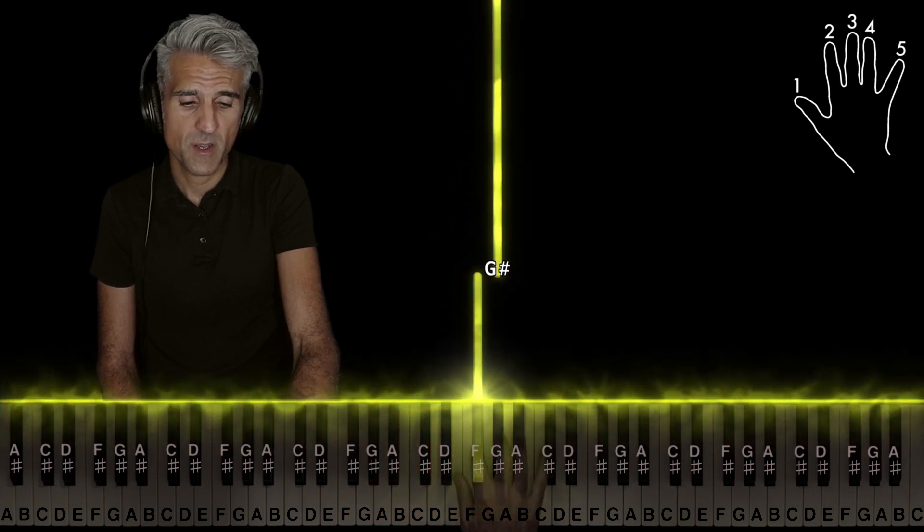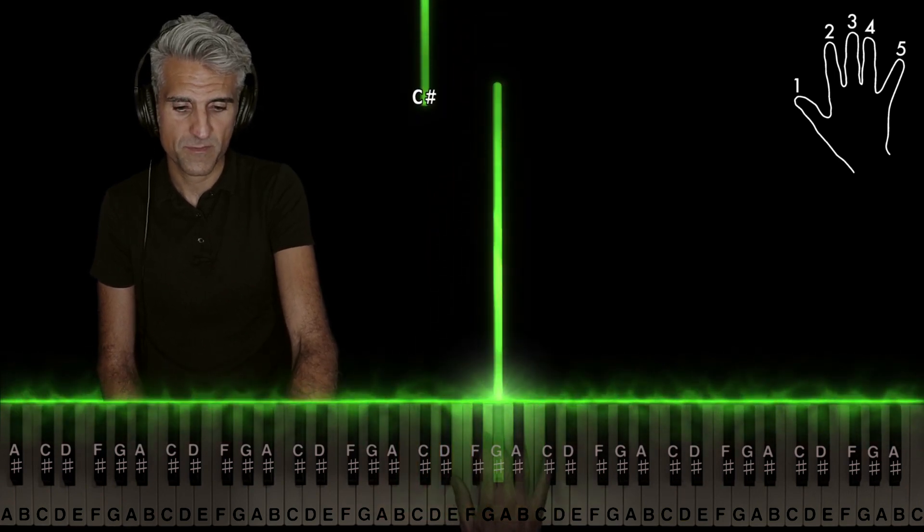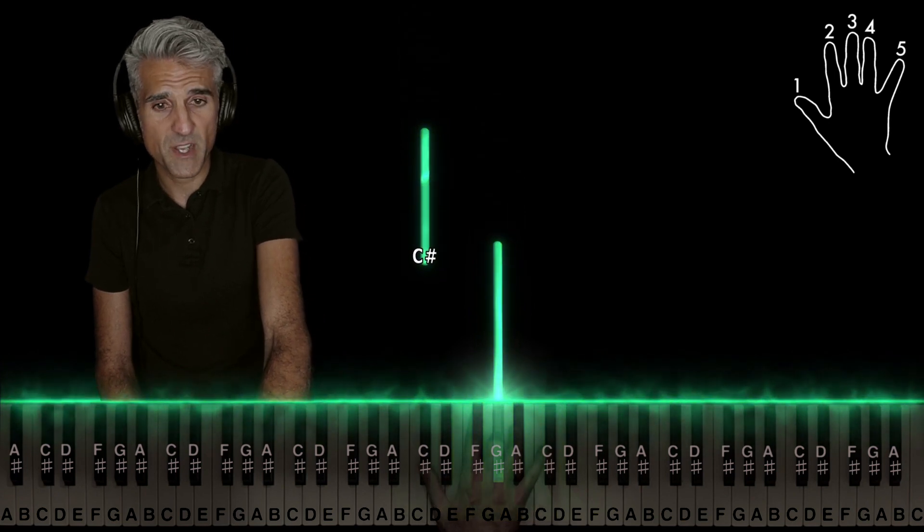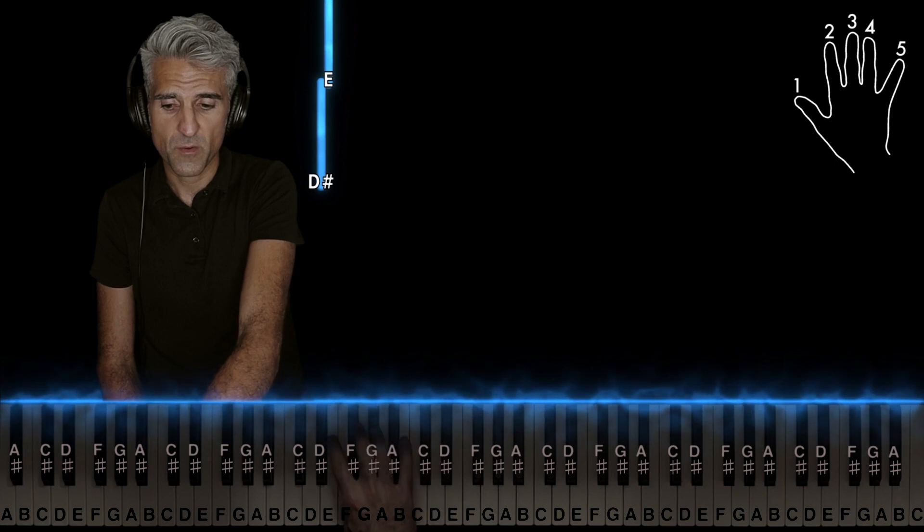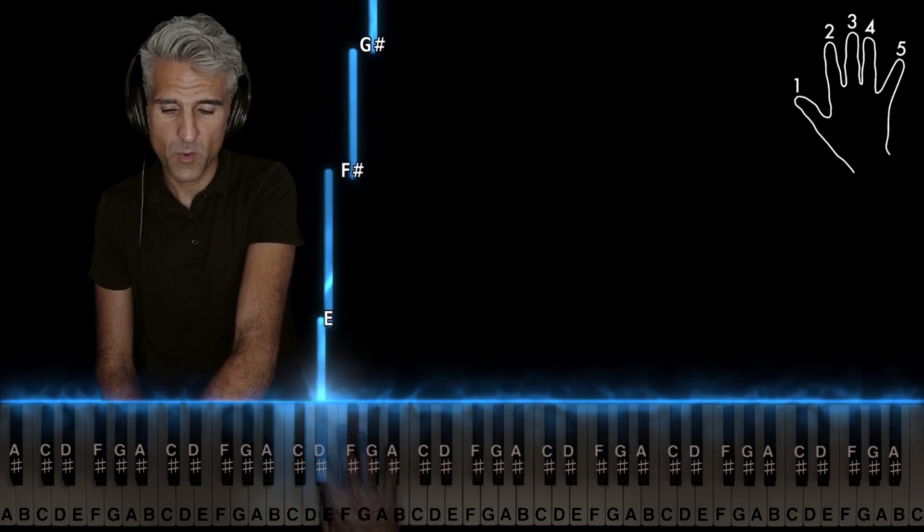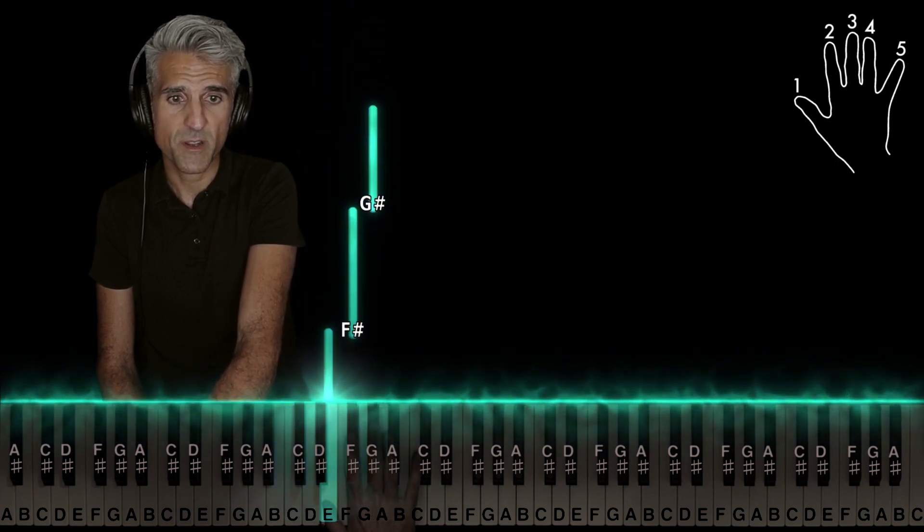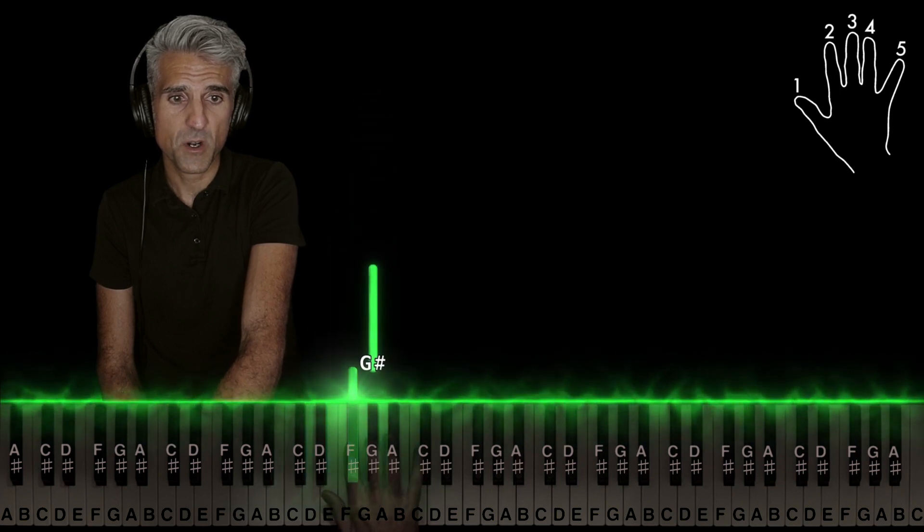And three on G sharp. One will move down to C sharp. And then move your right hand down super low: two on D sharp, one on E, two on F sharp, three on G sharp.